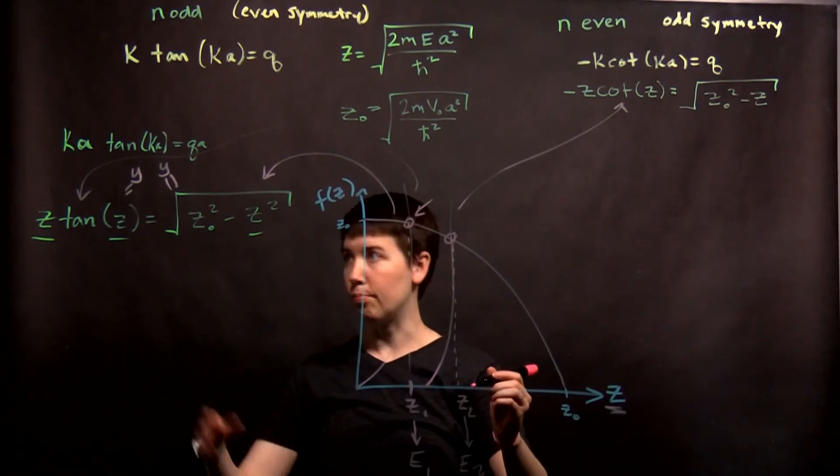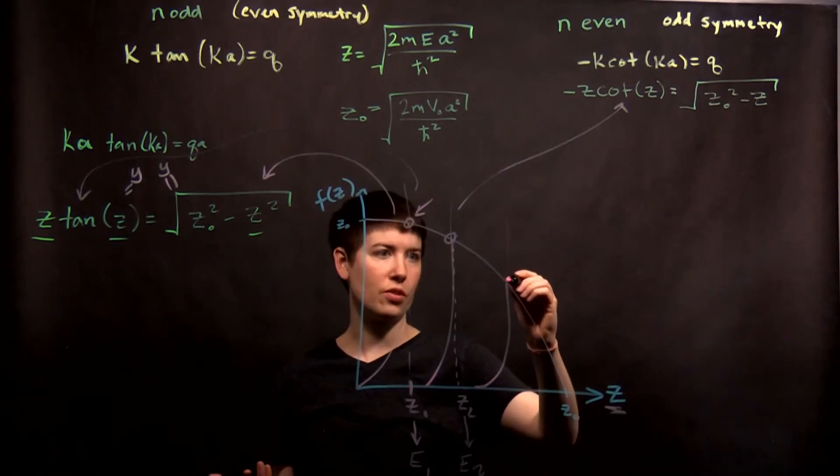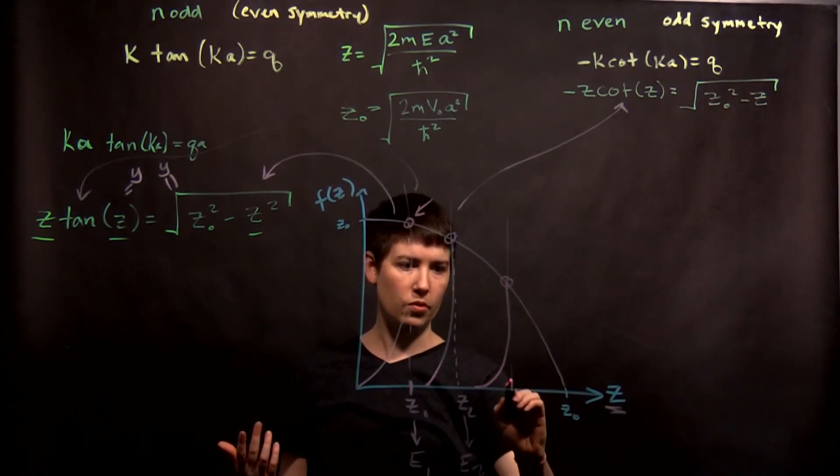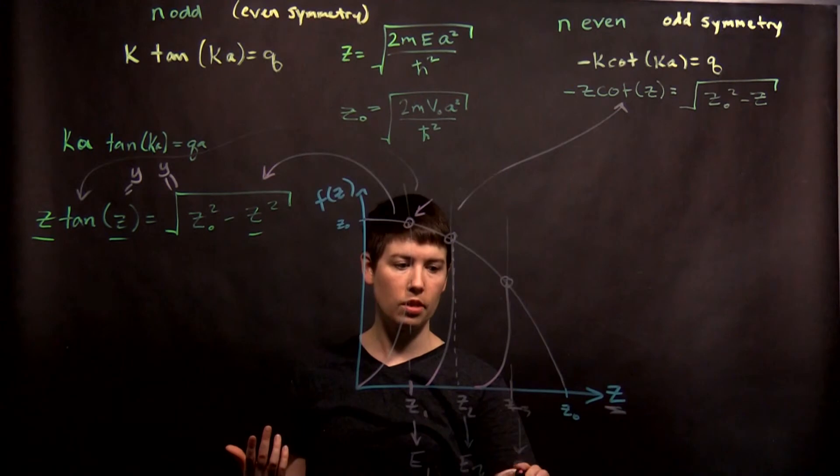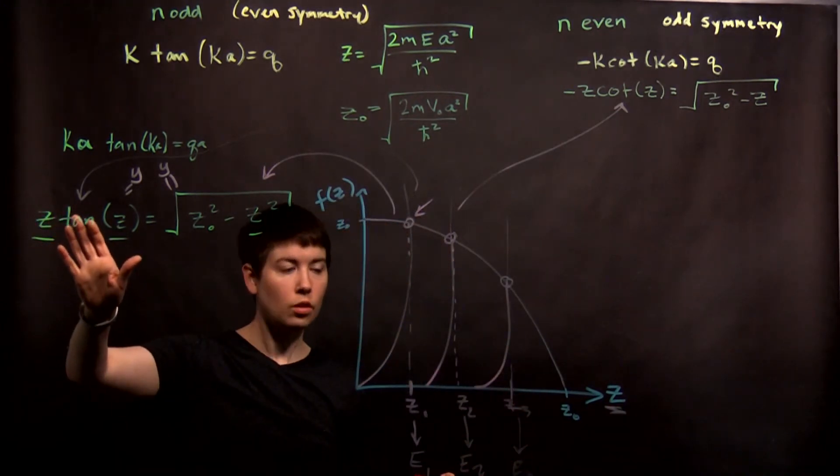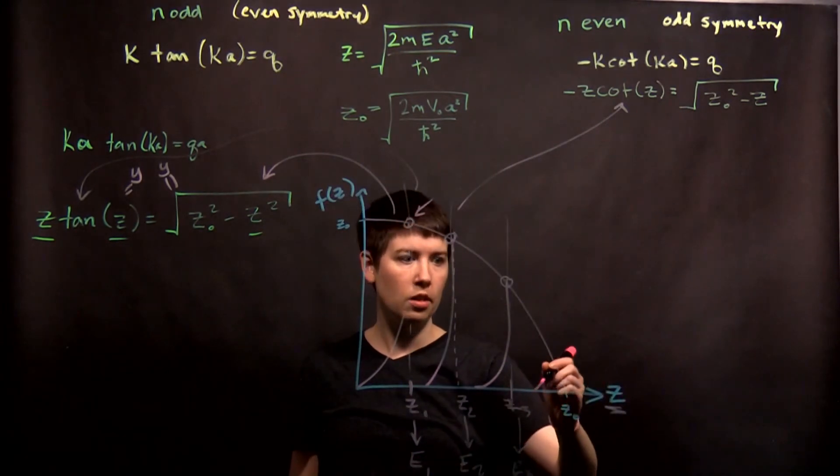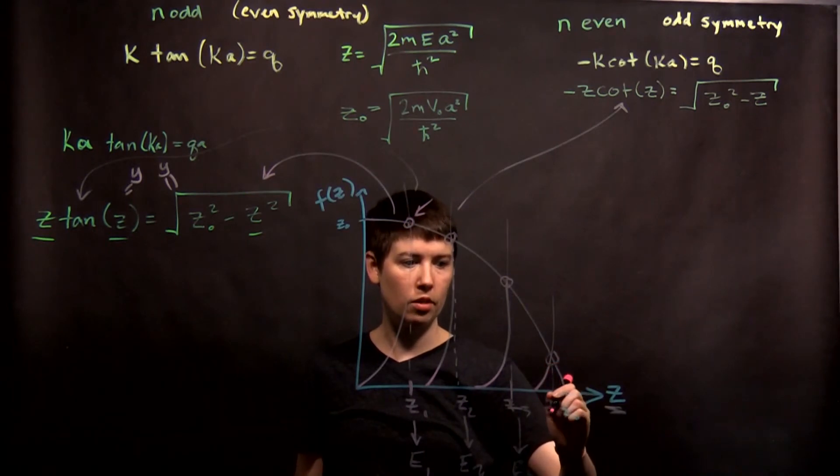So then we go back. We're going to plot our next function. It looks something like this. I'm really just kind of guessing the shape. These are complicated shapes. So then again, we drop this down. We get z3 giving us e3. And again, that came from the z tan z. Next, we plot this one again. And we maybe find this point. So we get z4.